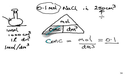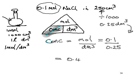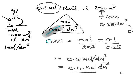The volume is in cubic centimetres, so we have to divide by 1,000 because there are 1,000 cubic centimetres in a cubic decimetre. That gives 0.25 cubic decimetres. To divide something by 0.25 is the same as to multiply by 4. So the answer is 0.4 mol per cubic decimetre, or 0.4 mol dm⁻³, read as 0.4 moles per cubic decimetre.